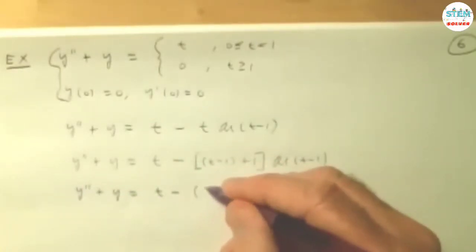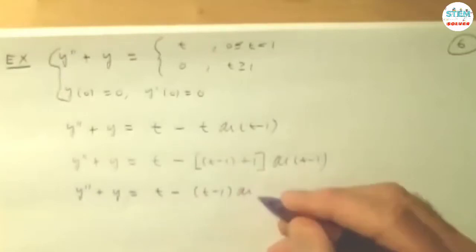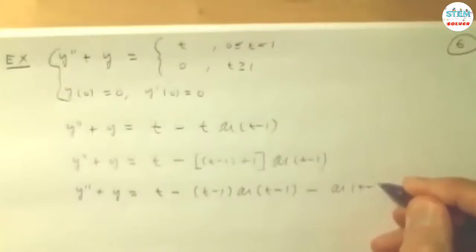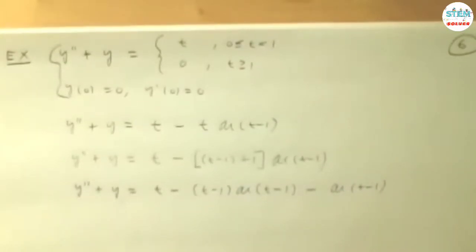So you're going to have t minus 1. I'm going to add all the steps here. I'll probably skip some of these, but I want to be sure it's clear on what I'm doing here. Now we can take a Laplace transform on both sides.